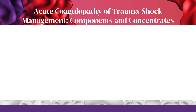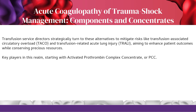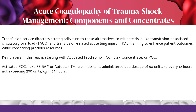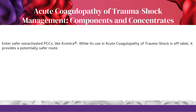Transfusion service directors strategically turn to alternatives to mitigate risks like TACO and TRALI, aiming to enhance patient outcomes while conserving resources. Activated prothrombin complex concentrates (PCCs), like FEIBA or Autoplex-T, can be administered at 50 units/kg every 12 hours, not exceeding 200 units/kg in 24 hours, but their use raises the specter of disseminated intravascular coagulation (DIC). Non-activated PCCs like Kcentra provide a potentially safer route, though their use in ACOTS is off-label.